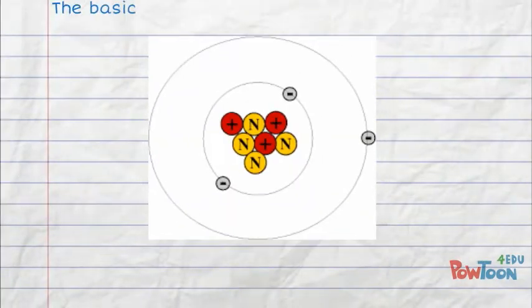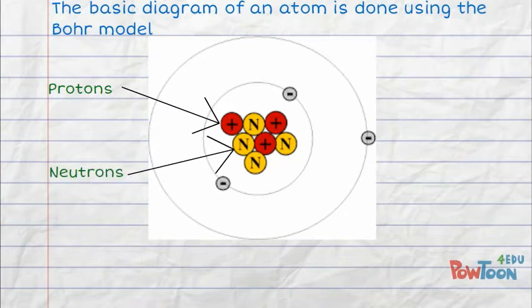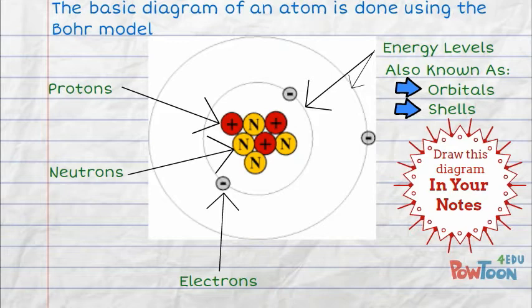The basic diagram of an atom is done using the Bohr model. Protons are in the nucleus marked with a positive sign or a P. Neutrons are in the nucleus marked with an N or no sign. Electrons are on the outside of the nucleus marked with a minus sign or an E. Energy levels are also known as orbitals or shells. Draw this diagram in your notes.